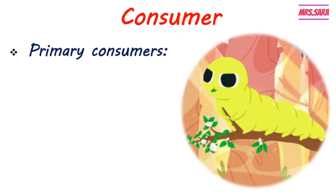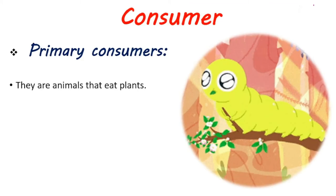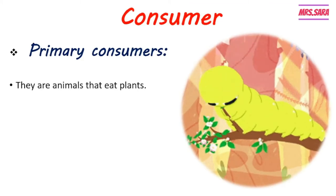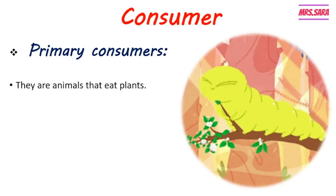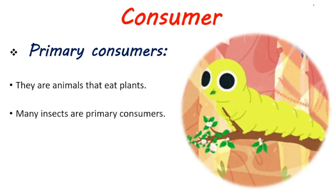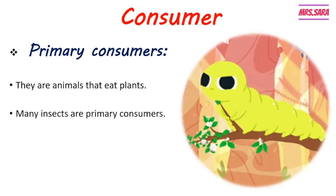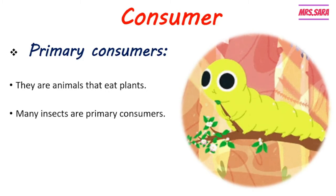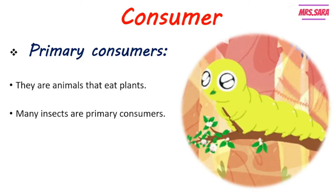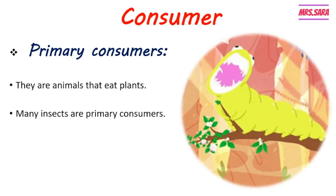The first type of consumer is primary consumers. They are animals that eat plants. They can be insects, like the worm, but not all primary consumers are insects — they can also be animals. So primary consumers can be animals or insects.